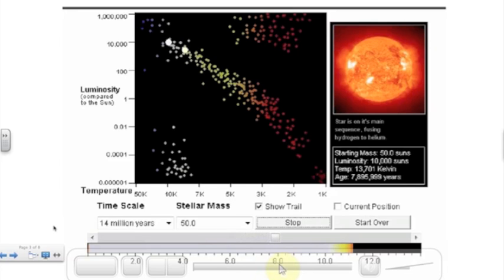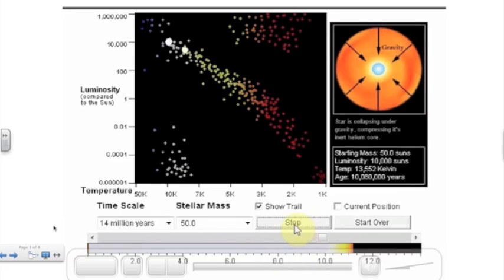So once again our timescale is in millions of years. So it goes through its main sequence burning very, very quickly. In fact, at 11.06 million years after it begins, it becomes the giant, a supergiant.